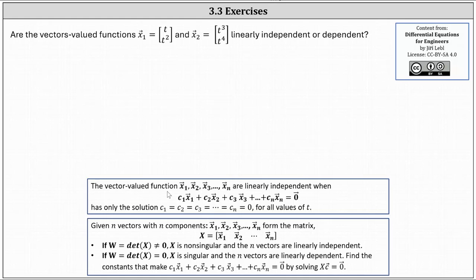First, the vector-valued functions x1 through xn are linearly independent when c1 times x1 plus c2 times x2, all the way through plus cn times xn equals a zero vector has only the solution c1 through cn equals zero for all values of t.